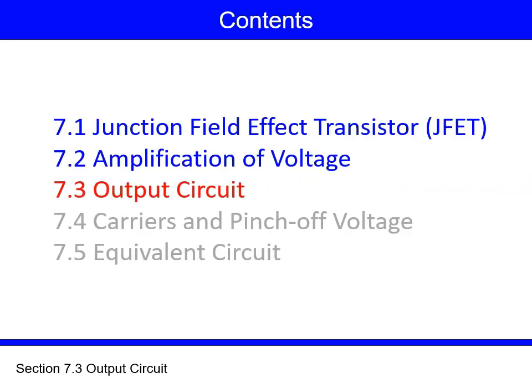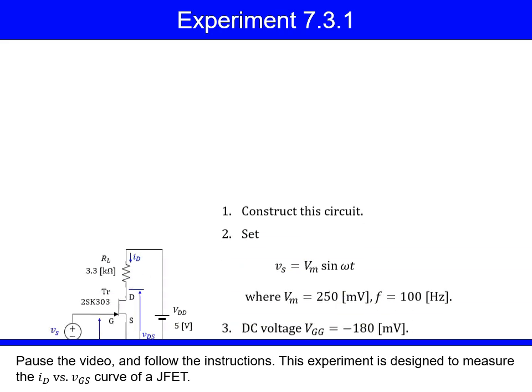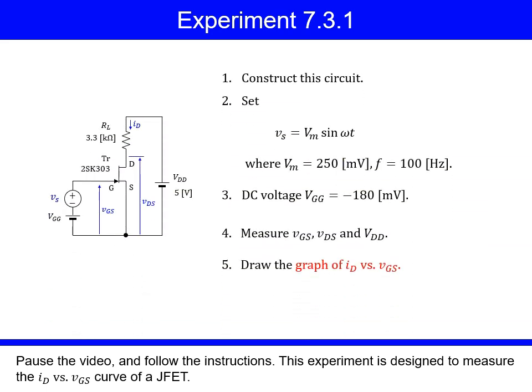Section 7.3, Output Circuit. Experiment 7.3.1: Pause the video and follow the instructions. This experiment is designed to measure the ID versus VGS curve of a JFET.